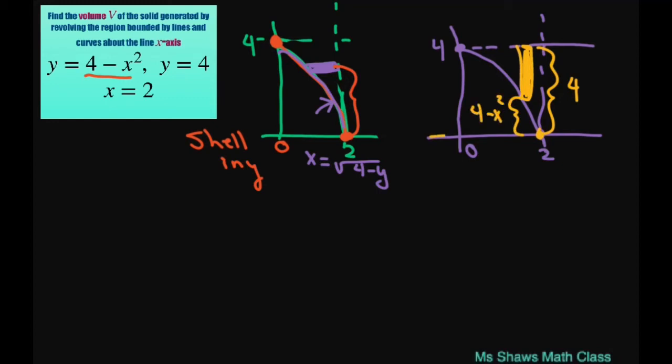Because this is your y. This one would be the washer method in y. This one would be the washer method in x. So let's go ahead and use this method.